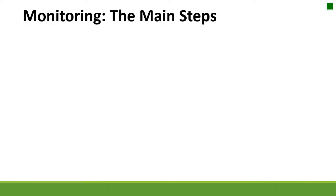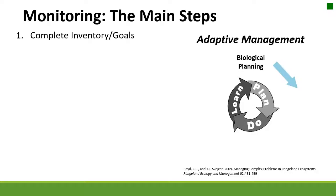There are a few main steps to any monitoring plan that you need to consider. The first is to complete our inventory and establish our goals. When I think about monitoring and the steps to creating an efficient and effective monitoring plan, I often go back to Boyd and Svetkar's adaptive management framework, where step one — completing the inventory and setting goals — falls under biological planning.